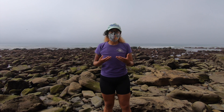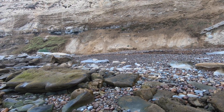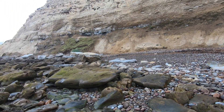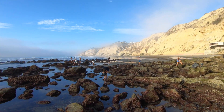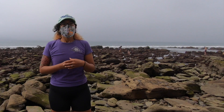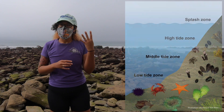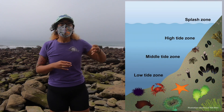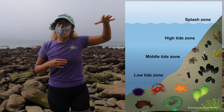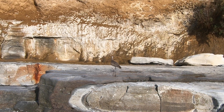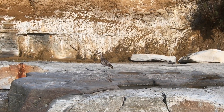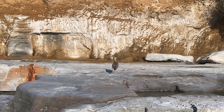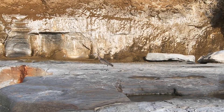Tide pools are part of the intertidal zone. The intertidal zone is a transition from terrestrial or land habitat to oceanic or marine water habitats. Within the intertidal zone, we generally have about four different zones. At the very top — the highest part — we have what's called the splash zone. Here we only have a little bit of seawater spraying and splashing onto the rocks, a little bit of mist. It's kind of moist, but not very much water, and it's never submerged.